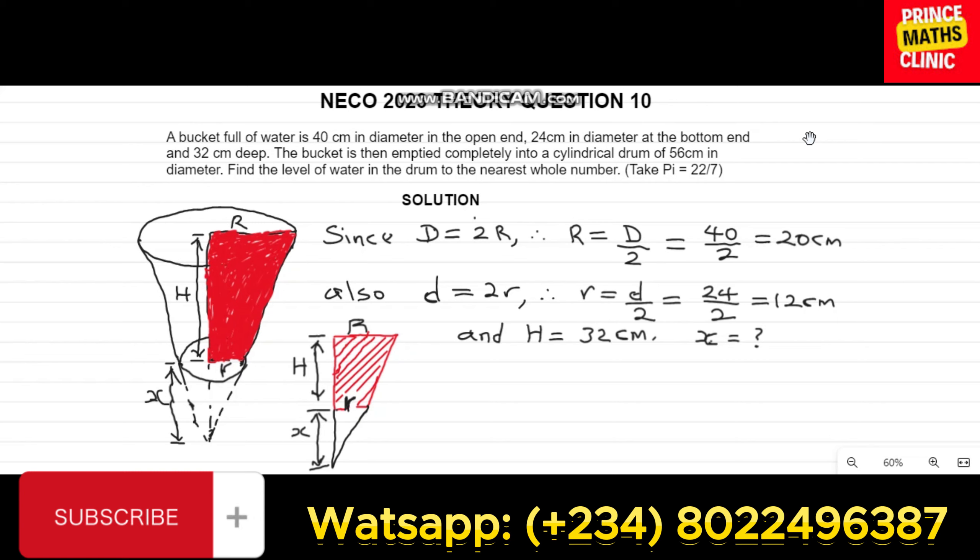So looking at the question, we were told that a bucket full of water is 40 cm in diameter at the open. Now, this is the open, this portion is the open. So if the diameter is from one end of the circle to the other end of the circle, that is what a diameter looks like.